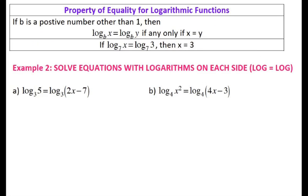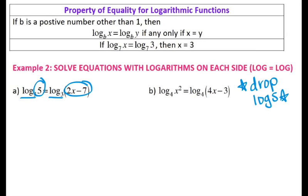The other scenario is when you have a log equals a log. Having a log equals a log is the same idea as having the same bases when solving exponential equations — you drop your logs. Since you have the same base on both sides, what's inside must be equal. So we set 5 equals 2x minus 7, add 7 to both sides to get 12 equals 2x, so x equals 6.